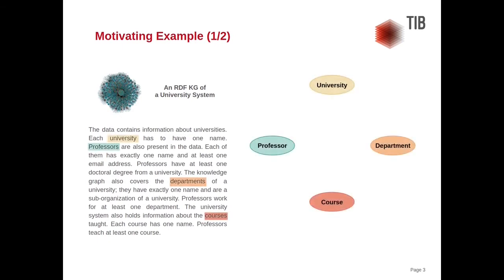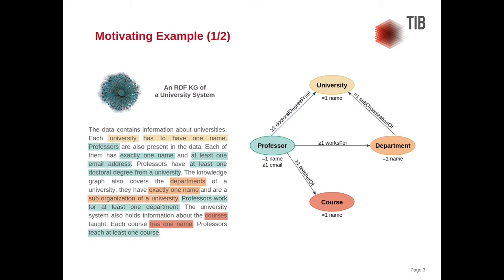The knowledge graph contains four classes: university, professor, department, and course. In SHACL, we call the set of constraints belonging to the same targets in the knowledge graph a shape. All shapes have one constraint in common: the entities of the class have exactly one name. Additionally, professors have at least one email address, but professors also have at least one doctoral degree from a university. These intershape constraints can be represented as edges between the nodes. We call a set of SHACL shapes and their relationships a SHACL network.